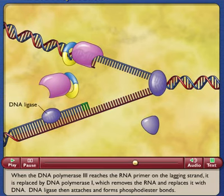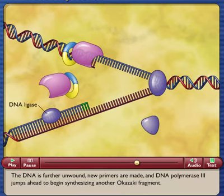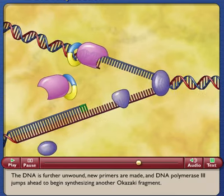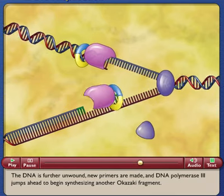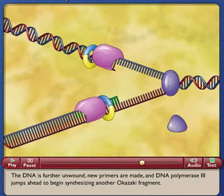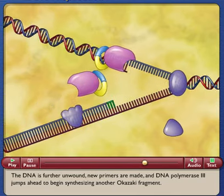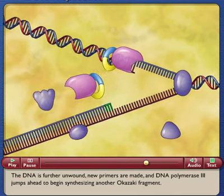DNA ligase then attaches and forms phosphodiester bonds. The DNA is further unwound, new primers are made, and DNA polymerase 3 jumps ahead to begin synthesizing another Okazaki fragment.